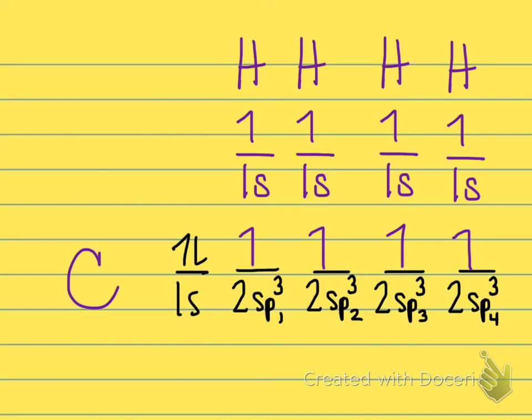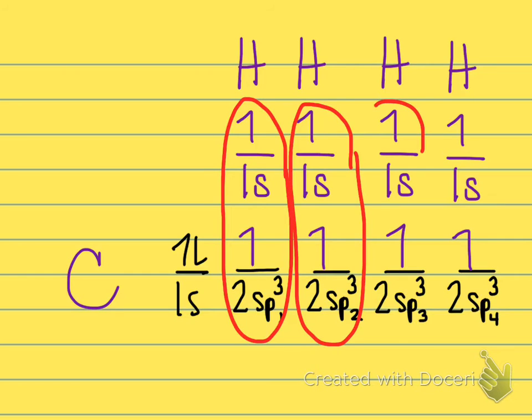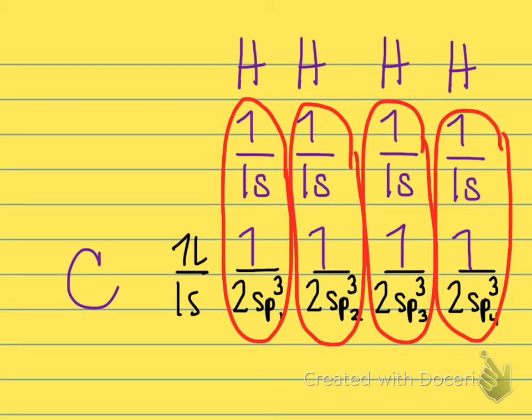Hey, look at that! Now we've got that scenario that we saw with fluorine, where we have these neat little orbitals with a single electron in them that are capable of lining up and sharing electrons with something else that has an orbital with one electron in it. Like, maybe hydrogen to give us CH4 or methane. That's it!